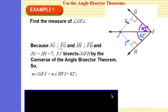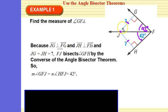That's going to be the converse of the angle bisector theorem. The angle bisector theorem says if it's an angle bisector, then the distance from a point on the angle bisector to each leg is equal. The converse is: because they're equal, therefore it is an angle bisector, making these equal.